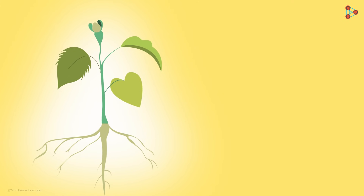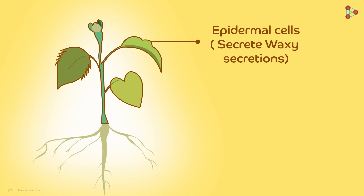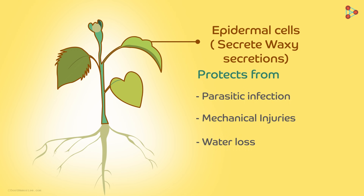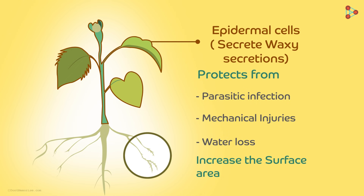On the other hand, in terrestrial plants, usually the aerial parts have epidermal cells specialized in waxy secretions, and it helps in numerous ways — like preventing parasitic infection, protection against mechanical injuries, and even loss of excessive water during high temperatures. In addition to this, when we observe the roots of plants, we find tiny, numerous hair-like structures. These are also modifications of the epidermal cells which help in increasing the surface area of absorption.